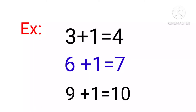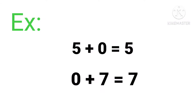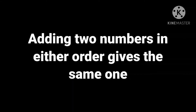What is the next number of 3? 4. 6 plus 1 equals 7. 9 plus 1 equals 10. Very good. Next, adding 0 to any number will give the number itself. For example, 5 plus 0 equals 5, or 0 plus 7 equals 7.